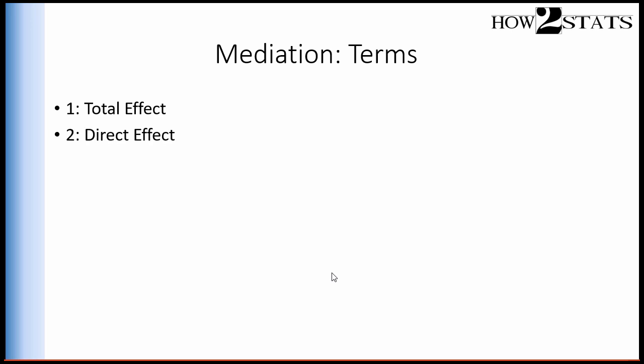The first term is total effect. The second is direct effect, and the third is indirect effect. In any mediation analysis, you should be speaking about a total effect, a direct effect, and an indirect effect. Whether the direct effect or the indirect effect is statistically significant is the purpose of conducting the mediation analysis in operational terms.